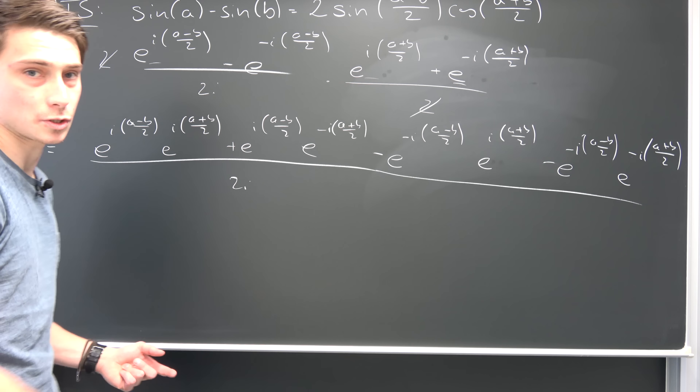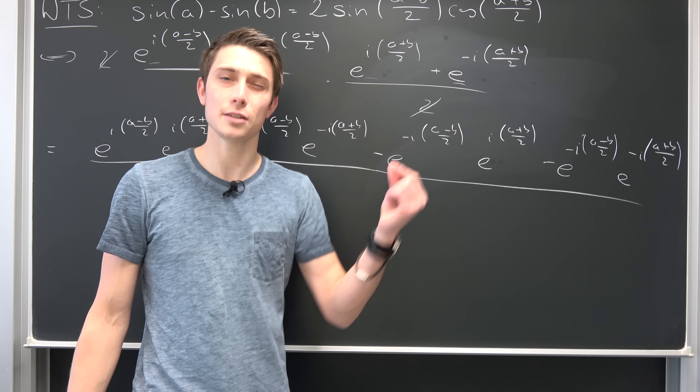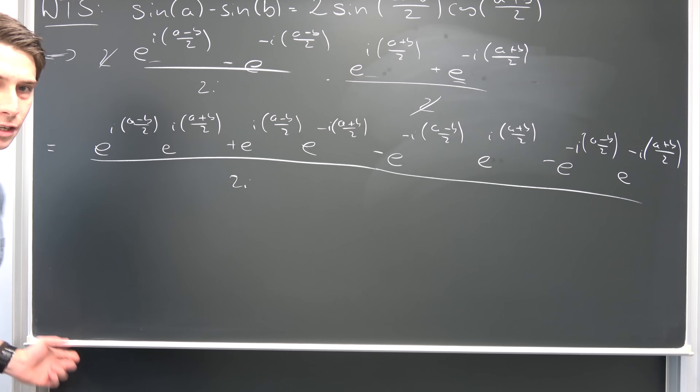Now we can use the exponential rules, because e to the a times e to the b is nothing but e to the a plus b. What is going to cancel out? Well, first the b over 2 terms cancel: we have negative b over 2 and positive b over 2 canceling out. Then the a over 2 terms: negative a over 2 and positive a over 2 cancel. Similarly for another pair, negative b and positive b cancel in the process as well.